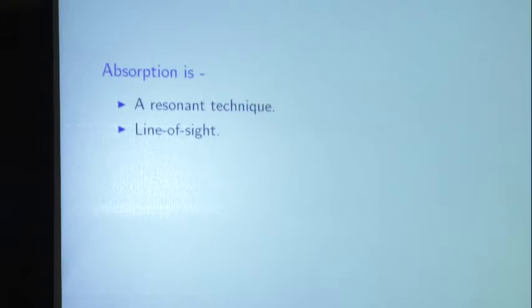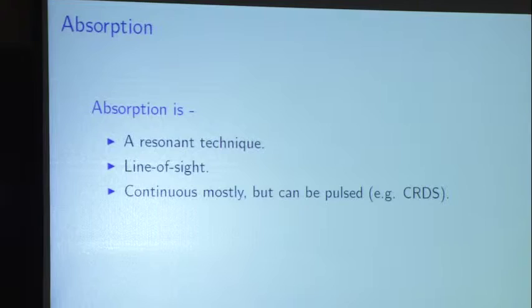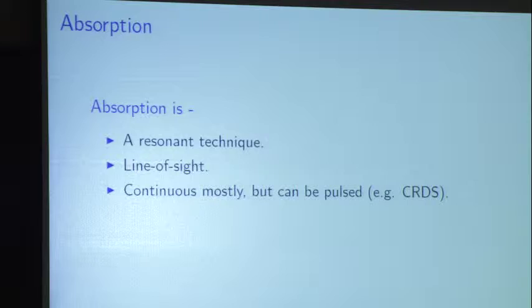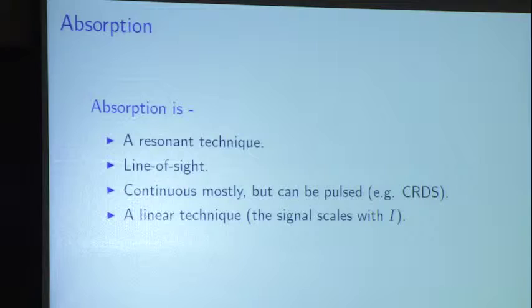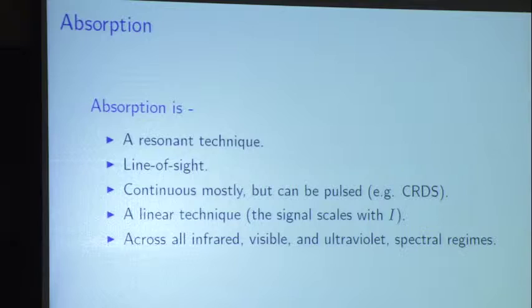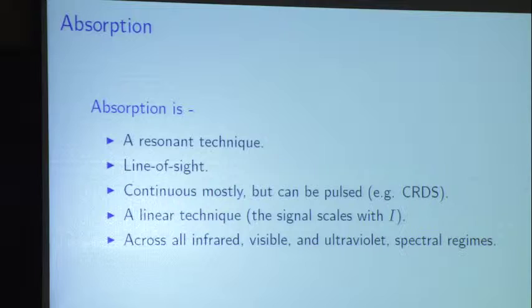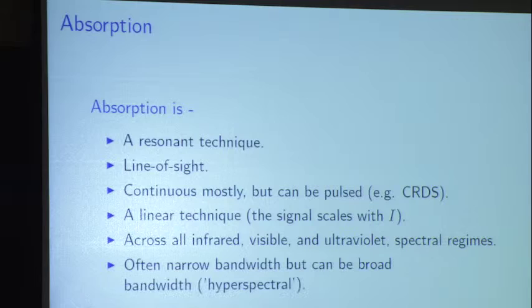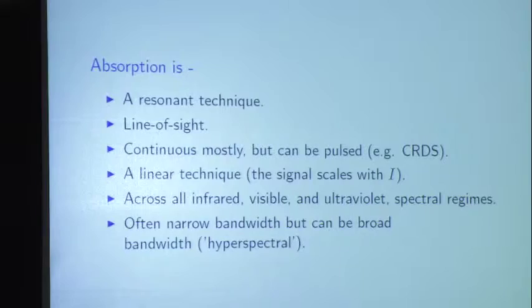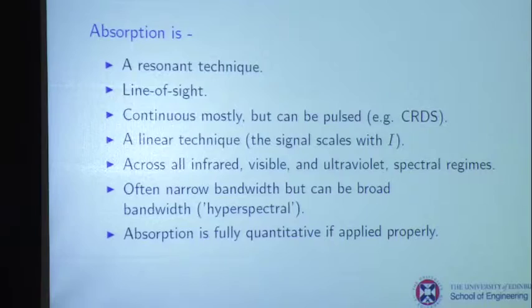Absorption is a resonant technique so we have to use spectroscopy. It's a line of sight technique, which is one of its weaknesses — it goes all the way across the flame so it's path integrated. Mostly we use continuous wave lasers but we can use pulsed lasers. It's a linear technique; the signal scales with the irradiance. You can do this in the infrared — the fundamental vibrational bands of molecules have really strong cross-sections — or in the visible and ultraviolet. It's fully quantitative if you apply it properly.